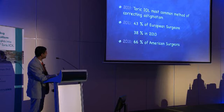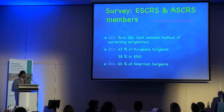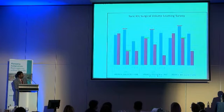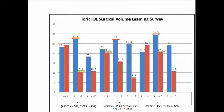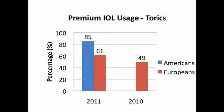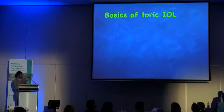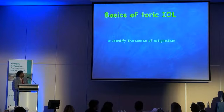Looking at the data between European surgeons between 2010 and 2011, the percentage of people using monofocal toric intraocular lenses is on the rise, and the percentage is always higher on the other side of the Atlantic. A 2011 survey of ASCRS surgeons showed 66 percent of American surgeons use toric intraocular lenses for correcting corneal astigmatism. The numbers are gradually increasing for both Europeans and Americans for the use of toric intraocular lenses, and premium IOL usage, both for monofocal torics and multifocal torics, is also on the rise.